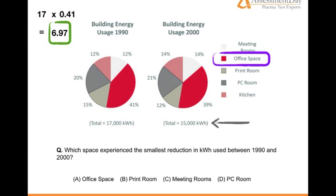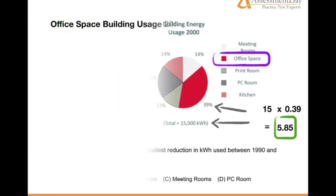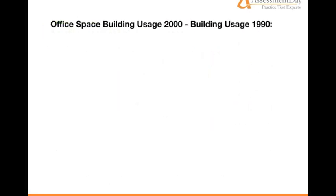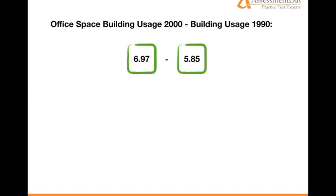Let's do the same for the right-hand pie chart: 15 multiplied by the percentage 39, or 0.39. So 15 times 0.39 equals 5.85. So to calculate the difference, we subtract the 2000 figure from the 1990 figure — in other words, 6.97 minus 5.85 equals 1.12.